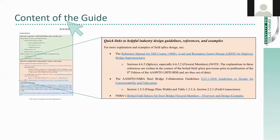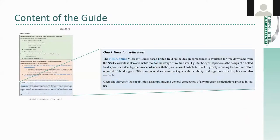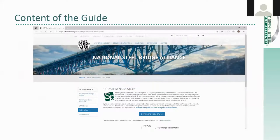Each of these hyperlinks takes you directly to the document. Let's click on the link for the G12.1 guideline. Just like that, you're taken directly to an online, free-for-download copy of the G12.1 guideline. The bottom part of that quick links page — the light blue box — includes quick links to useful tools. In this case, there's a hyperlink to the NSBA splice spreadsheet and a short description of it. One click of your mouse takes you directly to the NSBA splice spreadsheet on the NSBA website where you can download it for free.